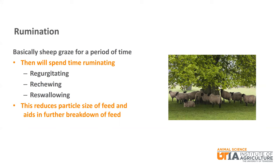Sheep will graze for a period of time and then will ruminate, which basically consists of regurgitating, re-chewing, and re-swallowing the forages that they have consumed. This works to reduce the particle size and aids in further digestion for the animal.